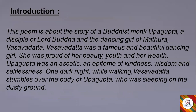This poem is about the story of a Buddhist monk Upagupta — a disciple, meaning a follower, of Lord Buddha — and the dancing girl of Mathura, Vasavadatta. Vasavadatta was a famous and beautiful dancing girl who was proud of her beauty, youth, and wealth. Upagupta was an ascetic — an epitome of kindness, wisdom, and selflessness. 'Ascetic' means a very stern religious follower.